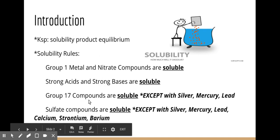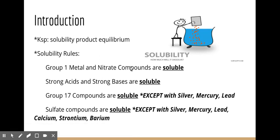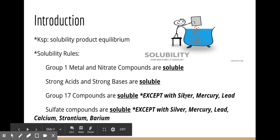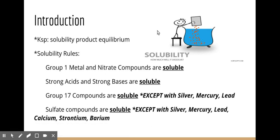Group 17 compounds and sulfate compounds have exceptions. Group 17 compounds — like fluorine, chlorine, and bromide — are soluble except when paired with silver, mercury, or lead. If I have any of those Group 17 ions with silver, mercury, or lead, we classify it as insoluble.